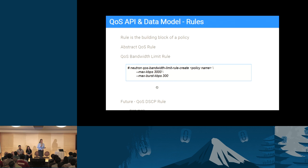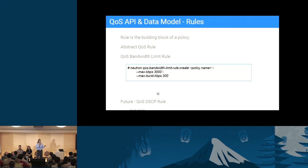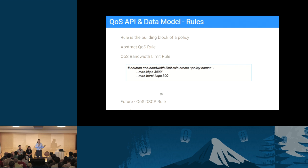The next API model we added is the rule. We added an abstract entity — quality of service rule — to allow extension with multiple types in the future. The first type implemented in Liberty is the bandwidth limit rule, which has two parameters: max kilobits per second and max burst in kilobits. A DSCP marking rule is already approved as a blueprint for Mitaka; it will have one parameter — the DSCP mark as an integer.